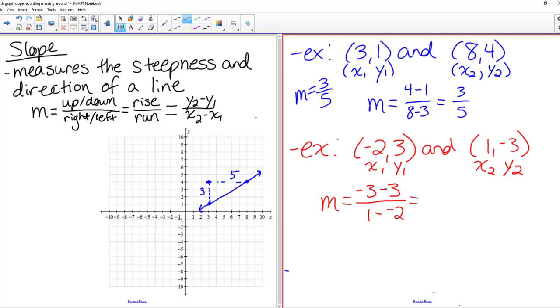So on top, y2 is -3 minus y1 of 3 over x2 is 1 minus x1 is -2. So -3 minus 3 on top, -6 over, on the bottom, this becomes a 1 plus 2, minus negative becomes a plus, so that is 3. So -6 over 3, which if we reduce that, that's -2 over 1, or that's just -2. I'm putting an or there, because sometimes we want to leave it as -2 over 1, so it's still in the form of the rise over run.